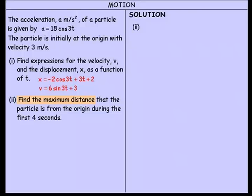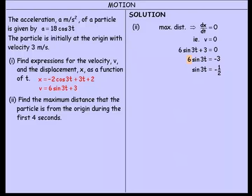We're asked to find the maximum distance the particle is from the origin during the first 4 seconds. When talking about maximums, we should think about the derivative. The maximum distance occurs when dx/dt equals 0. But dx/dt is the velocity, so we set the velocity equal to 0. Using our velocity equation and setting it to 0: taking 3 over gives minus 3, dividing both sides by 6 gives sine 3t equals minus one half.